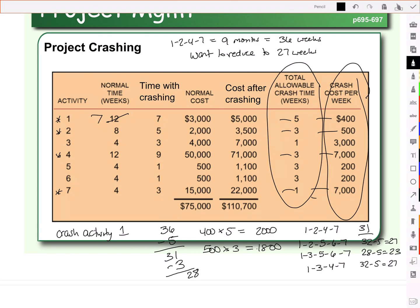The problem is we're not there yet. We're trying to get to 27 weeks. So we're going to need to crash another activity. Activity 1 has already been reduced from 12 to 7. Activity 8 has been reduced down to 5. And so now we need to figure out which activity next to crash. We go back again to our critical path and make sure the critical path hasn't changed.